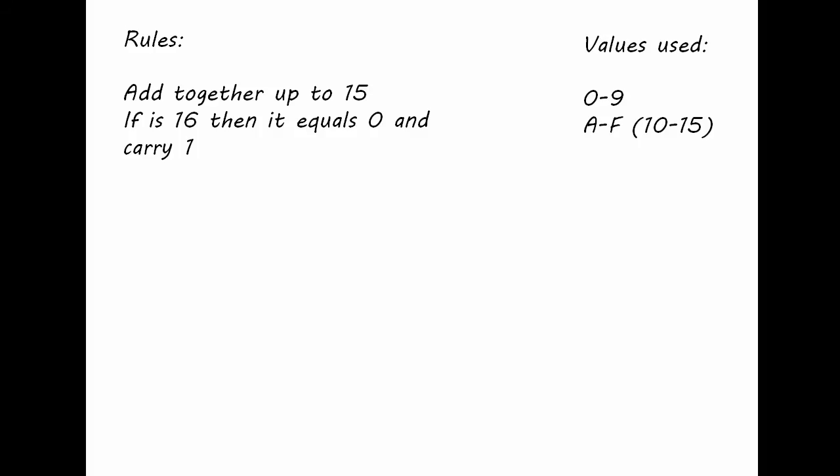To add hexadecimal numbers together, it's the same principle as adding numbers in decimal, which is 0 to 10. The only difference noted in the rules is that we work up to 16. Once we get to 9, we start using A to F. A being 10, all the way up to 15 being F.